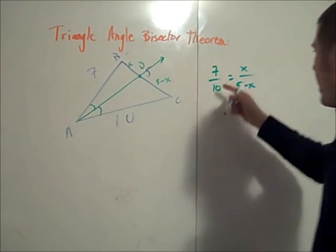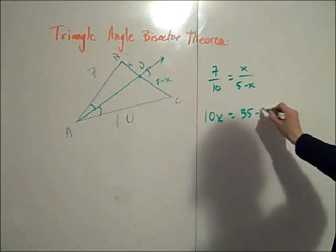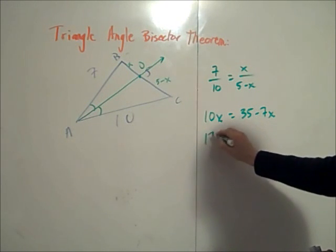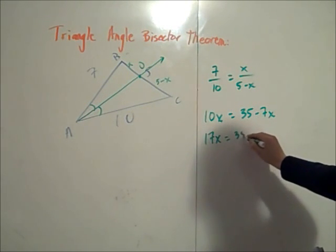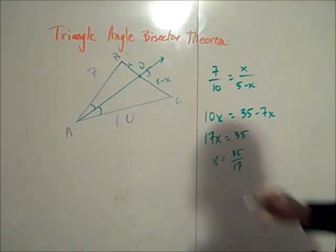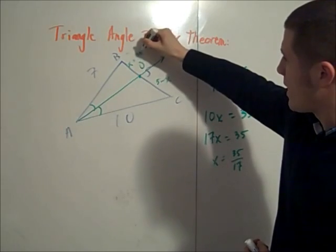And so now I can just cross multiply to find that 10X is equal to 35 minus 7X. Add 7X to both sides and we find that 17X is equal to 35, and so X is equal to 35 seventeenths. And so this length right here is actually 35 seventeenths.